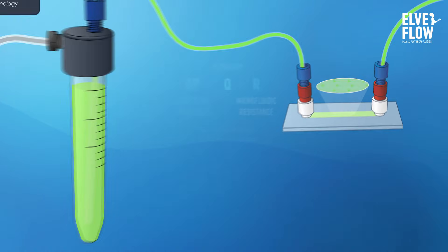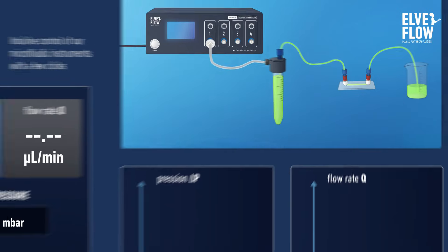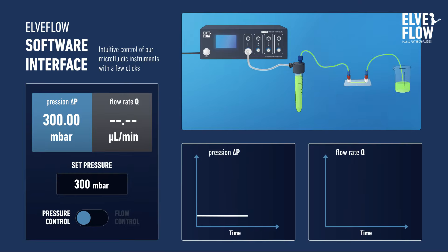The pressure-driven flow controller is controlled with software, which allows you to control the pressure by setting a target pressure. The higher the pressure difference, the faster the flow rate gets.